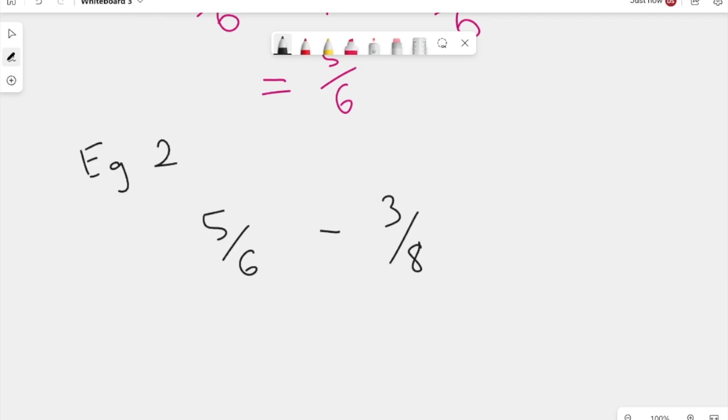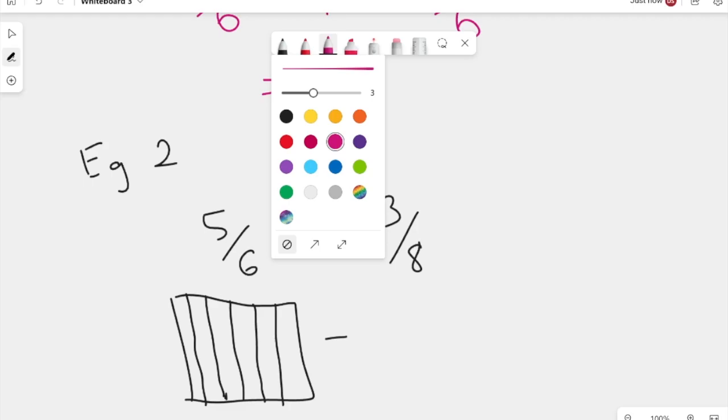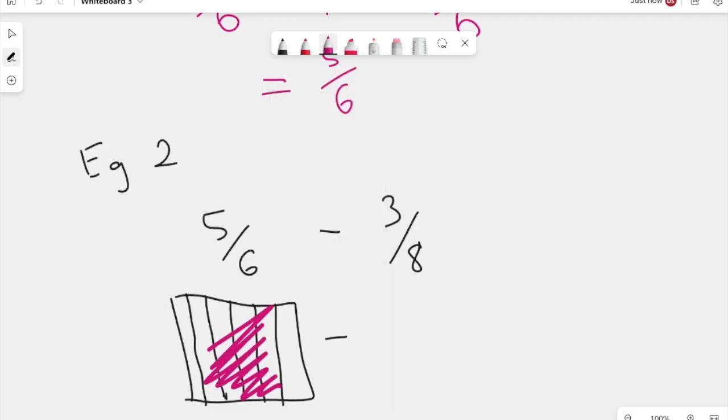Now let's actually draw these fraction squares out. For our five sixths, you can see I've just given up on trying to draw these nicely. I hope the idea still remains. We have one, two, three, four, five. We have five sixths. And from that, we're going to subtract. Let me shade these in first. We have five sixths of our first fraction square shaded.